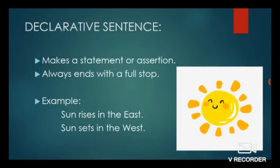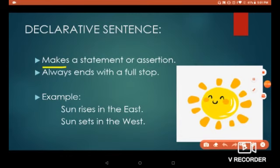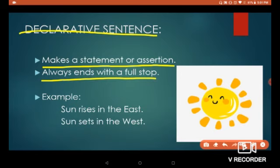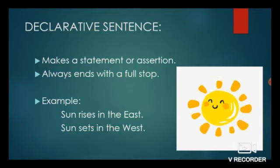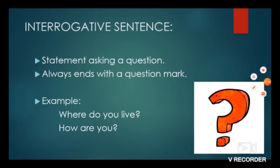A declarative sentence is a sentence that makes a statement or assertion. It always ends with a full stop. For example: 'Sun rises in the east' and 'Sun sets in the west.' These two sentences are declarative sentences as they give information, and they both end with a full stop.